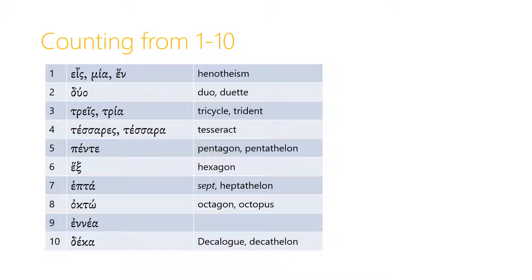Ennea is the Greek number nine, and it's the only of these ten numbers that really doesn't leave much of a trace in English. But the number ten, deca, we find lots of places in English. The decalogue means the ten words, and the decathlon is even more familiar from track and field than the heptathlon.